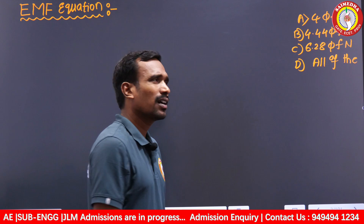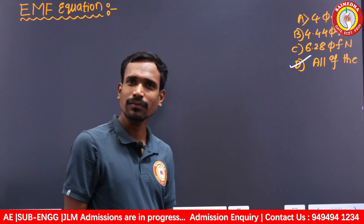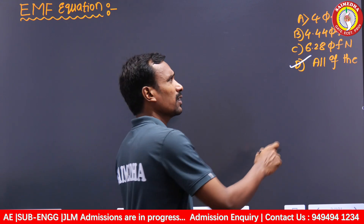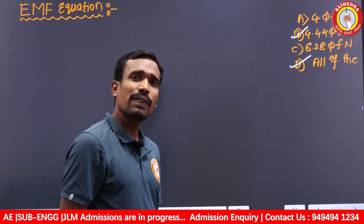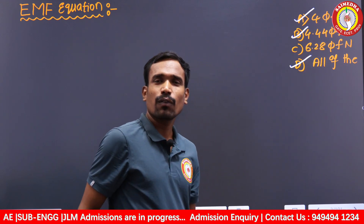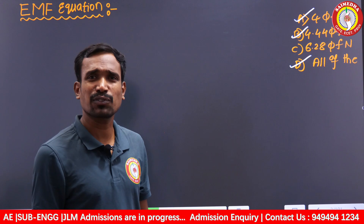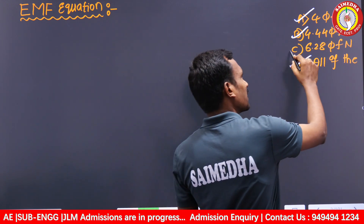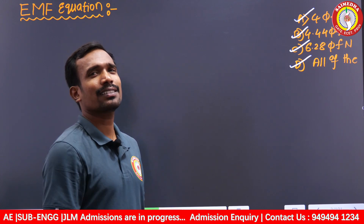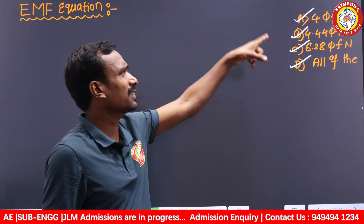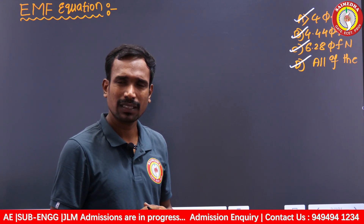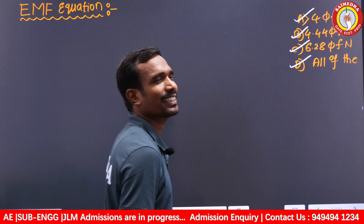For the first question — which is the correct EMF equation — all of the above is the correct answer. For the second question — E_RMS value — Option B is correct. For the third question — average EMF — Option A is correct. For the fourth question — maximum EMF induced — Option C is the correct answer. Now, did you find any mistake in these equations?